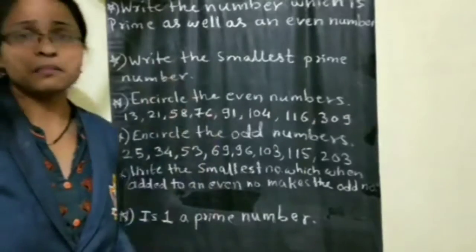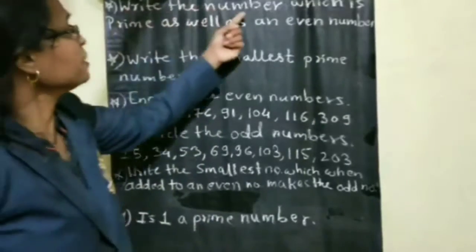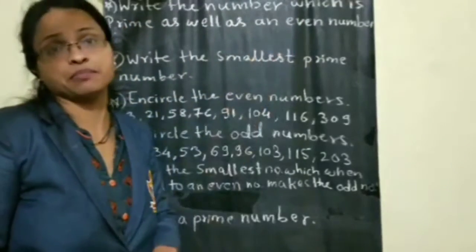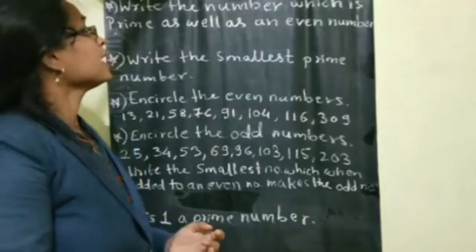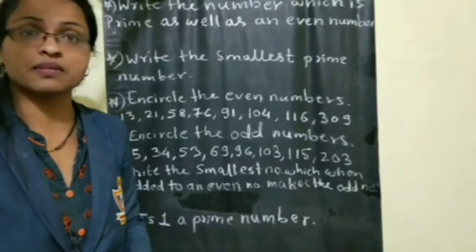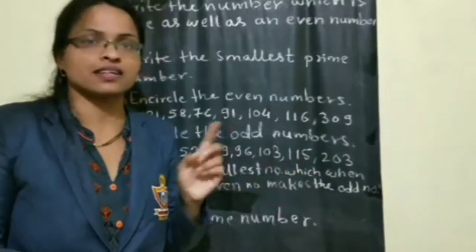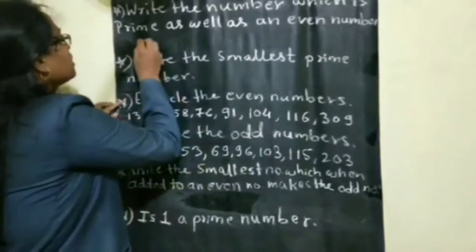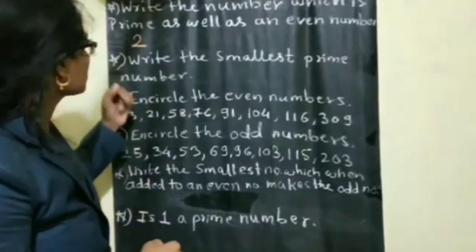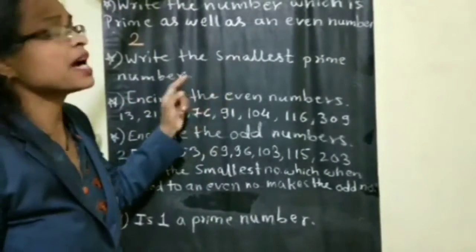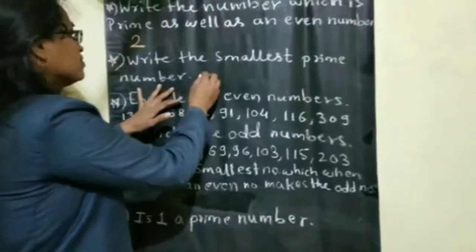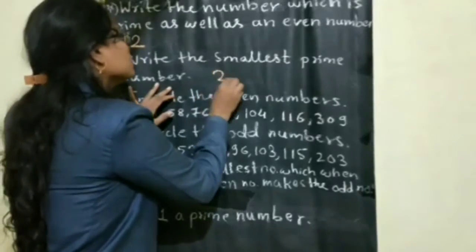Next example: write the number which is prime as well as an even number. That number should be prime as well as even — and the answer is 2. 2 is the number which is both prime and even. Next: write the smallest prime number. The smallest prime number is 2.